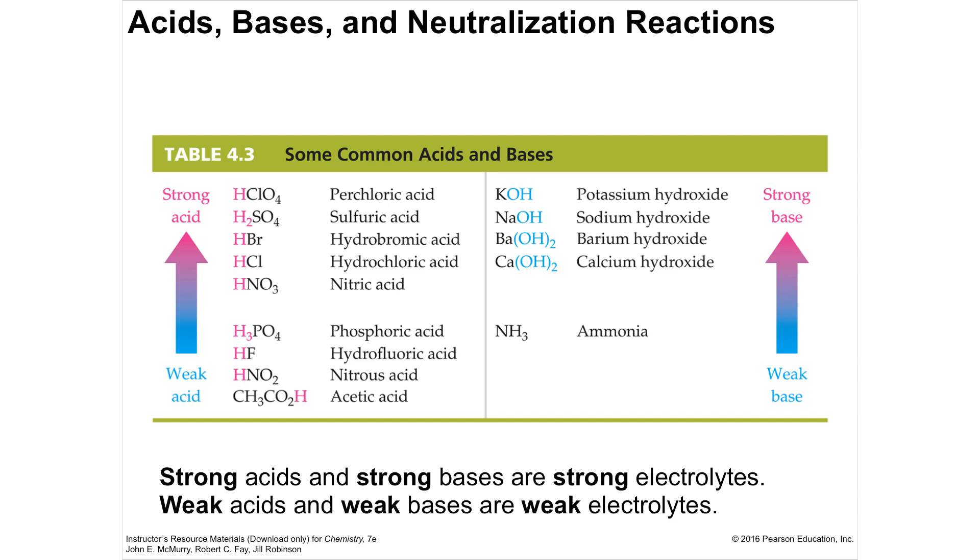This is a review when we were studying how you name acids. You name them based upon their anion. So, if you have, in this case, perchlorate, add a hydrogen. It's perchloric acid. If you have sulfate, so 8 goes to ick, 8 goes to ous, and the strong acids, the strong acids are strong electrolytes. They completely dissociate. Weak acids are weak electrolytes. They don't dissociate totally. So, this ties together the idea of strong and weak in acids and also electrolytes. So, a strong acid is also a strong electrolyte because it completely makes ions, just like we saw with other electrolytes.